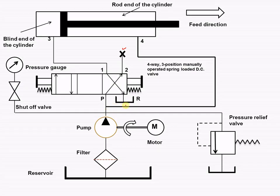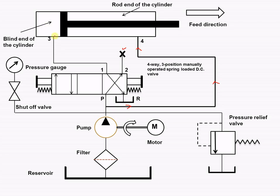The fluid will go from this line and enter into the rod end of the cylinder, causing the backward motion of the piston rod. The liquid from the blind end of the cylinder from port 3 will go to the reservoir R, as shown.